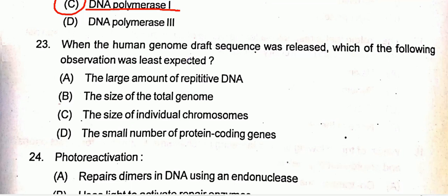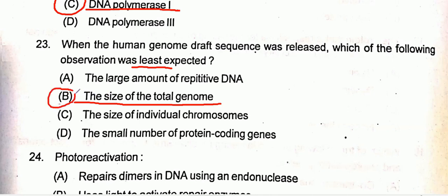Question twenty-three: when the human genome draft sequence was released, which observation was least expected? All options are expected, but one is the least expected — that will be the size of the total genome. So option B will be the correct one.